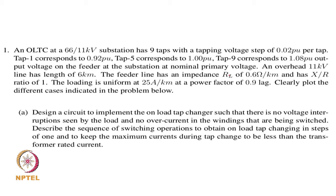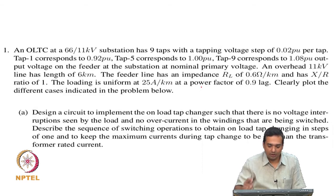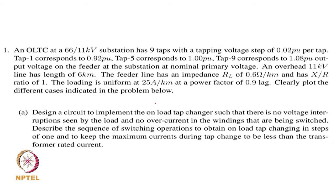This is when you have nominal voltages at input and output, with an 11 kV overhead line of 6 kilometers going out from the substation. The feeder line has a resistance of 0.6 ohms per kilometer, X/R ratio equal to 1, and uniform loading of 25 amperes per kilometer — giving 150 amps total for this single 6-kilometer feeder at a power factor of 0.9. We want to make plots of voltage profile and current profile.